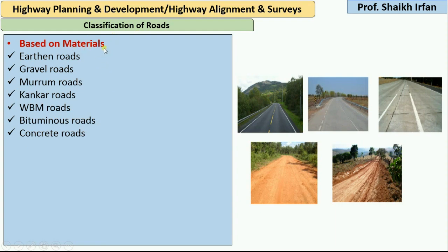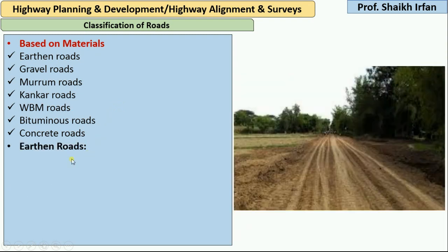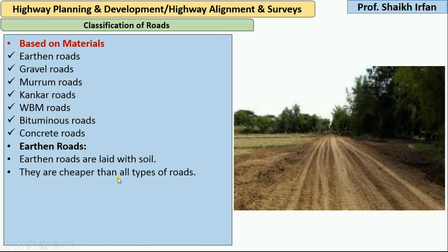Earthen roads are laid with soil — as the name says, the type of material used is soil. These are cheaper than all other types of roads, as we are just using soil in the construction of this type of road, so it is very cheap.